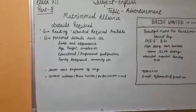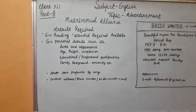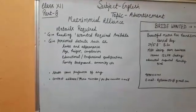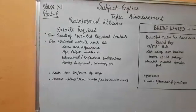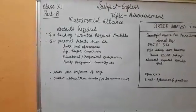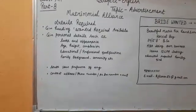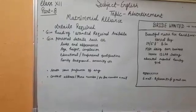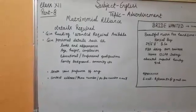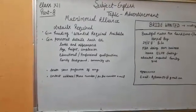You will mention height and complexion of the person. You will also write the educational details, professional qualifications, family background, and describe about the community etc. You will also describe the state preference if any, and at last you will give contact address, phone number, etc.